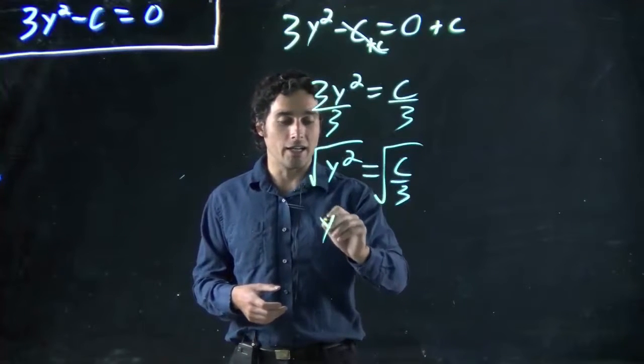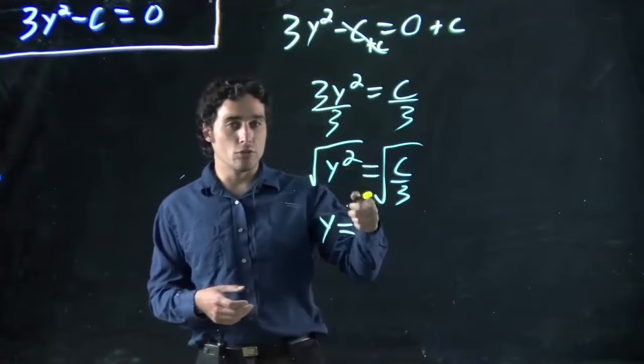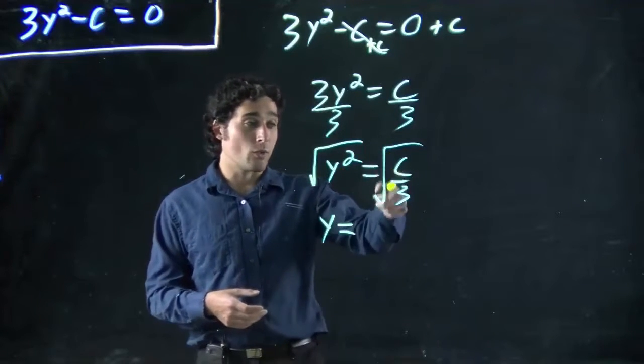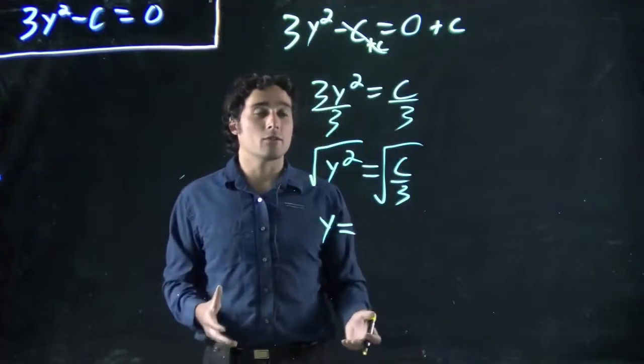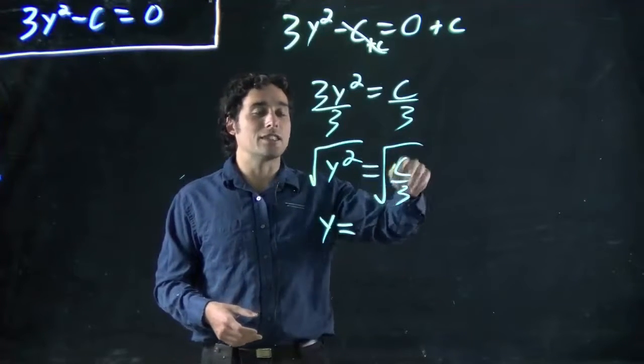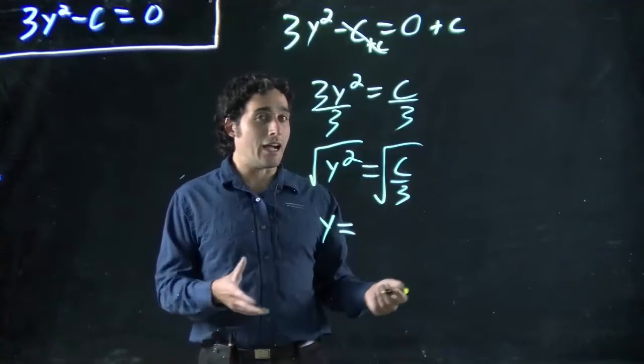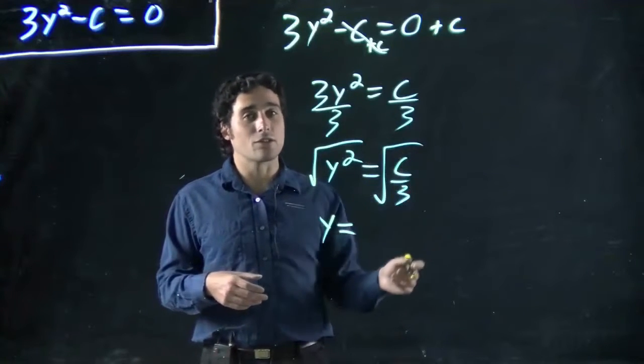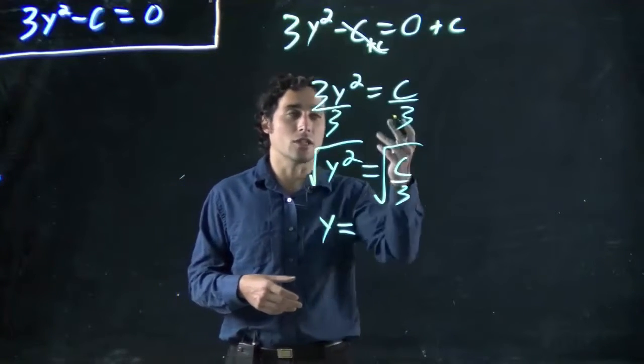So we get y. And then remember, we get two solutions because square root of c over 3 squared would give c over 3. But minus the square root of c over 3 times minus the square root of c over 3, or squared, would also give c over 3.